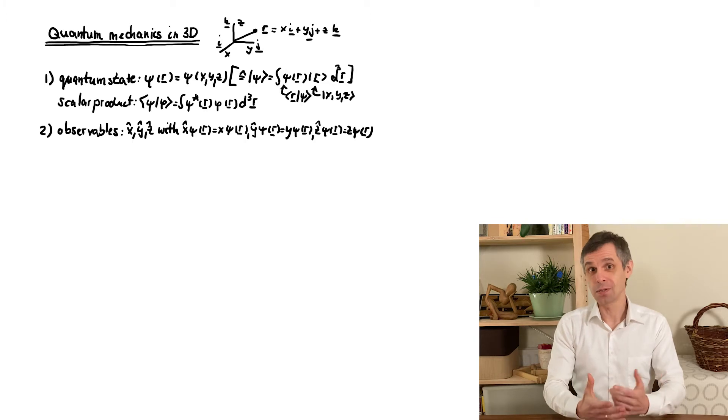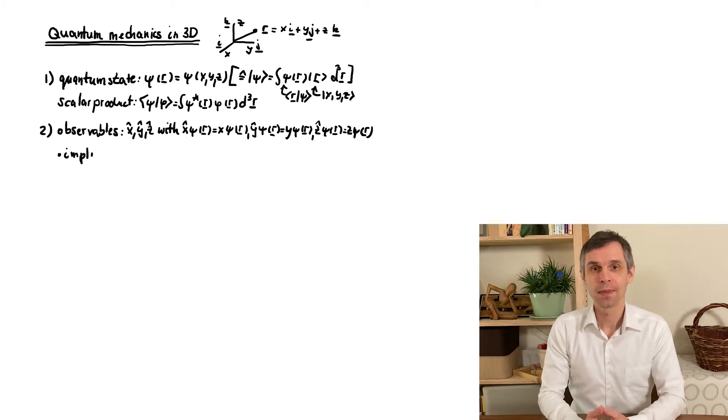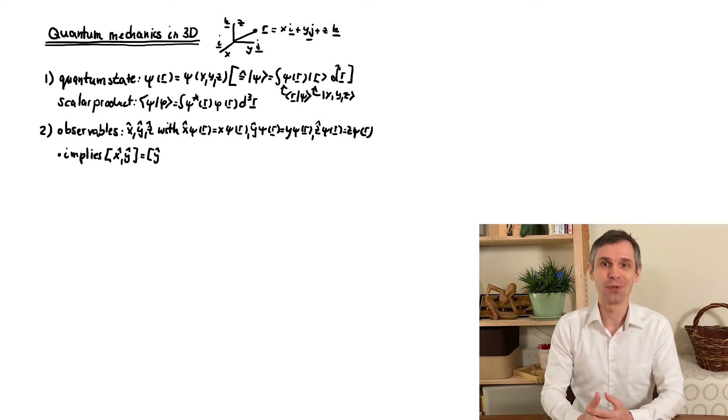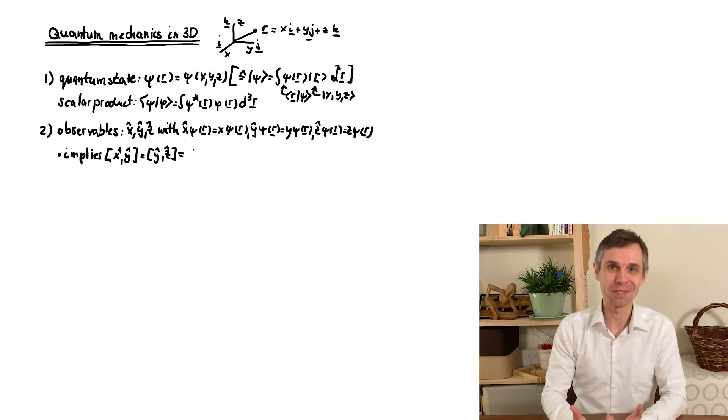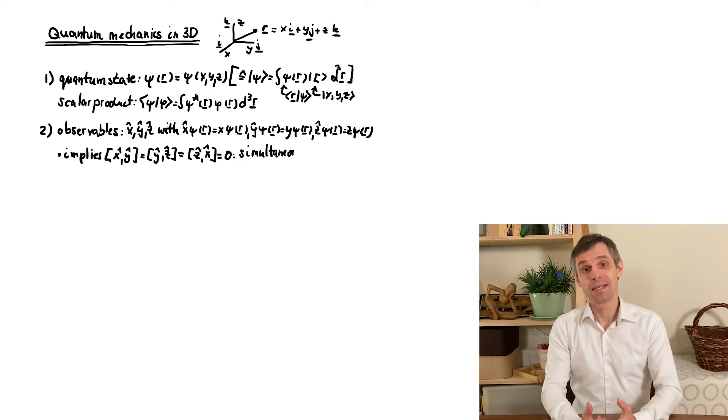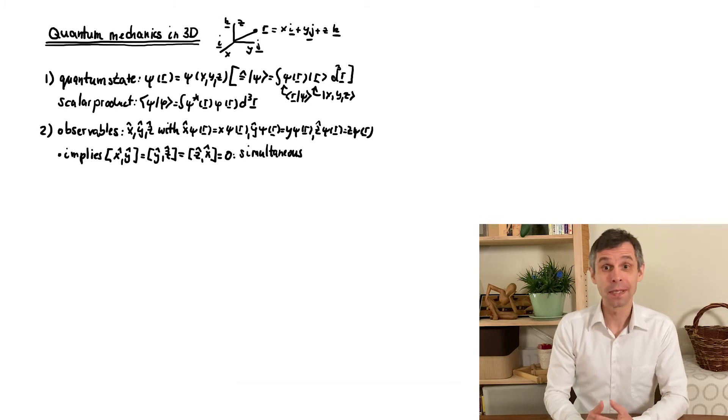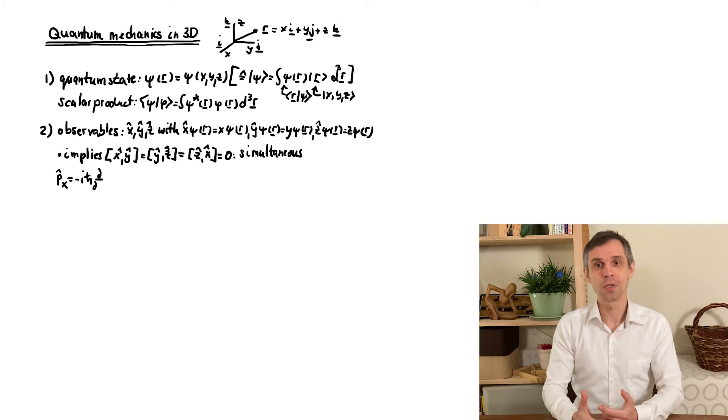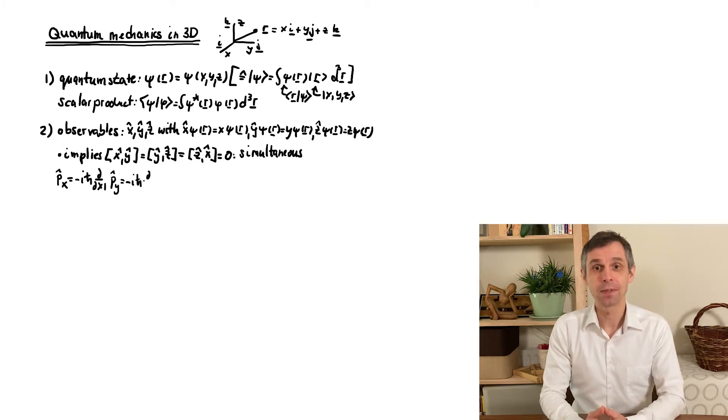They then also naturally commute. After all, the coordinates are just numbers. But look into non-commutative geometry if you wonder if this always has to be the case. This also allows us to introduce three corresponding momenta, which indeed describe the three components of momentum as observed in experiments. They look like a one-dimensional momentum for each direction.